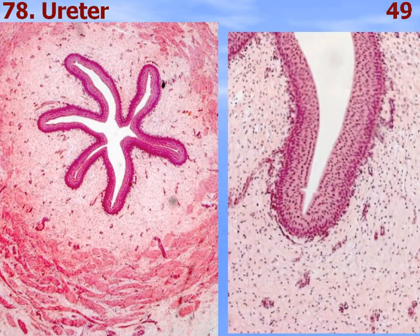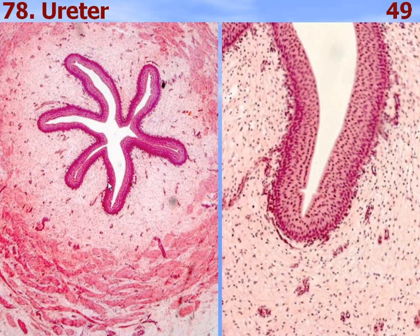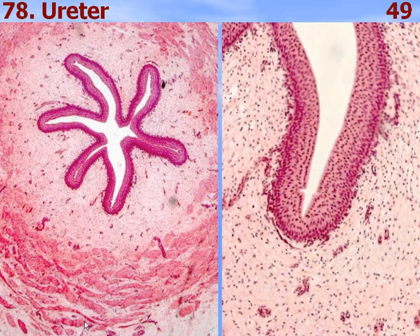The ureter is a typical tubular lined organ consisting of three membranes: inner mucous membrane, middle muscle membrane, and outer adventitial membrane. The mucous membrane consists of two layers: stratified transitional epithelium and lamina propria consisting of loose connective tissue. The muscle membrane consists of two layers of smooth muscle cells — inner longitudinal and outer circular layers — and around it is the adventitial tissue.